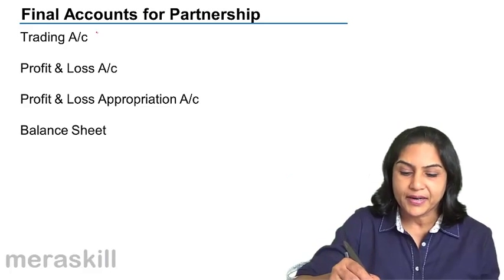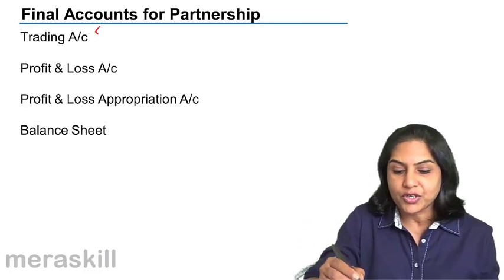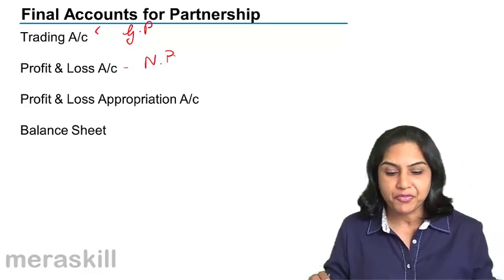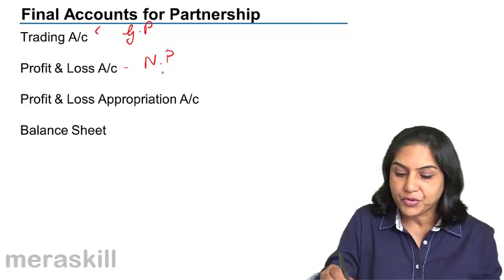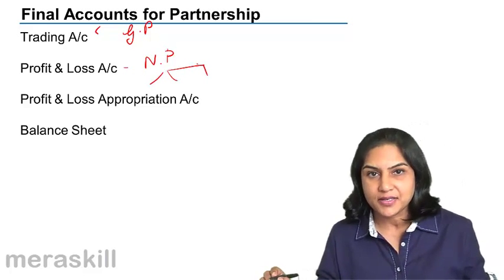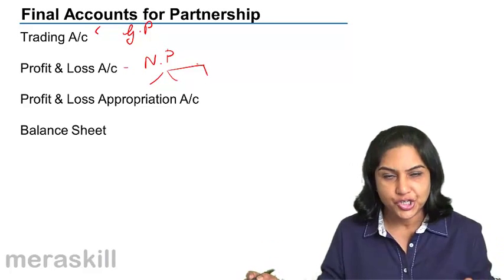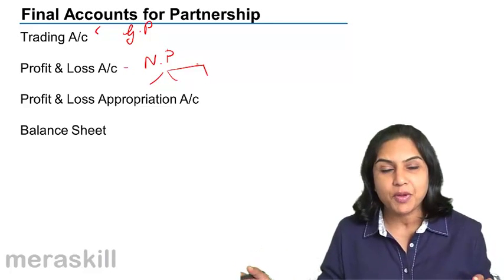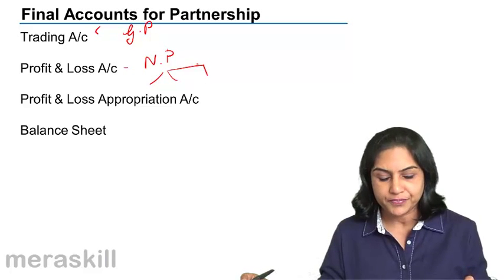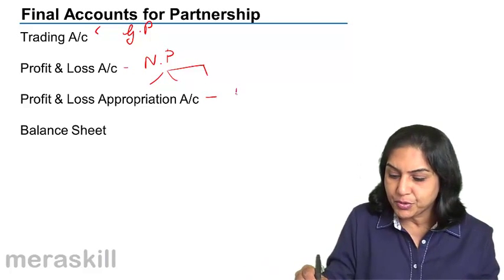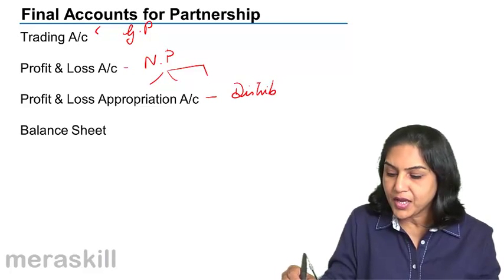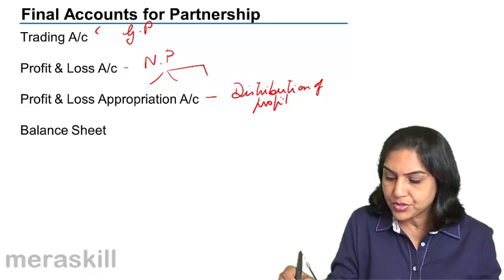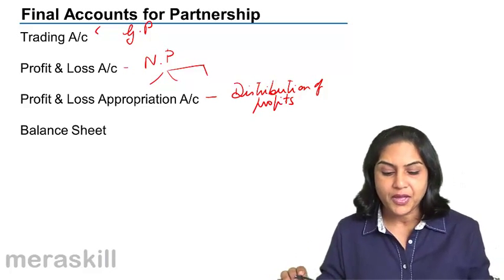In a partnership too, we would make a trading account and arrive at the gross profit. Then we would make a profit and loss account and arrive at a net profit. This net profit would be distributed to the partners — in what ratio? Interest on capital may be paid, salaries may be paid to some of the partners, and so on. The distribution of profits is shown through the profit and loss appropriation account.